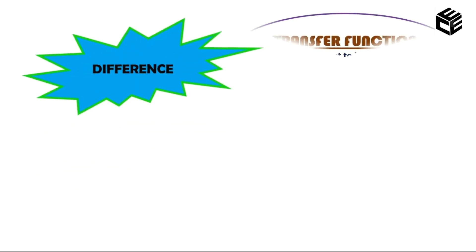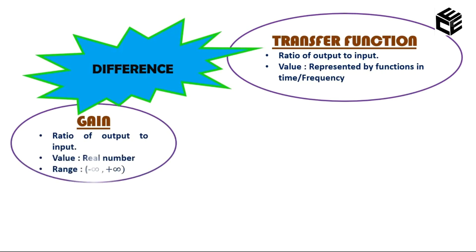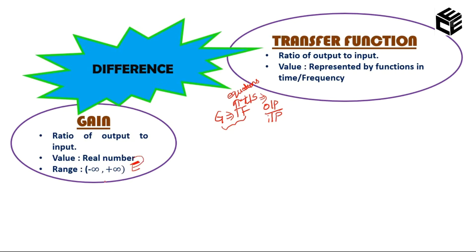Now let us see what is the difference between gain and transfer function. Both gain and transfer function are the ratio of output to input. However, transfer function is represented with the help of equations with respect to time domain and frequency domain — we get only an expression, not a definite value. But in the case of gain, we get a real number value ranging from minus infinity to infinity.